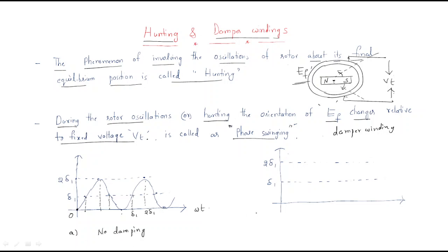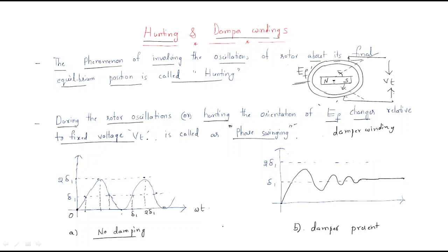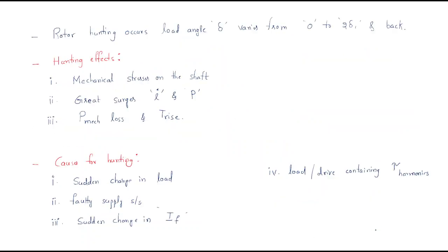Damping is used to reduce oscillations. If a damper is present in the circuit, the load angle initially reaches δ1, then slowly decreases and settles down at δ1. That is why damper windings are very important.